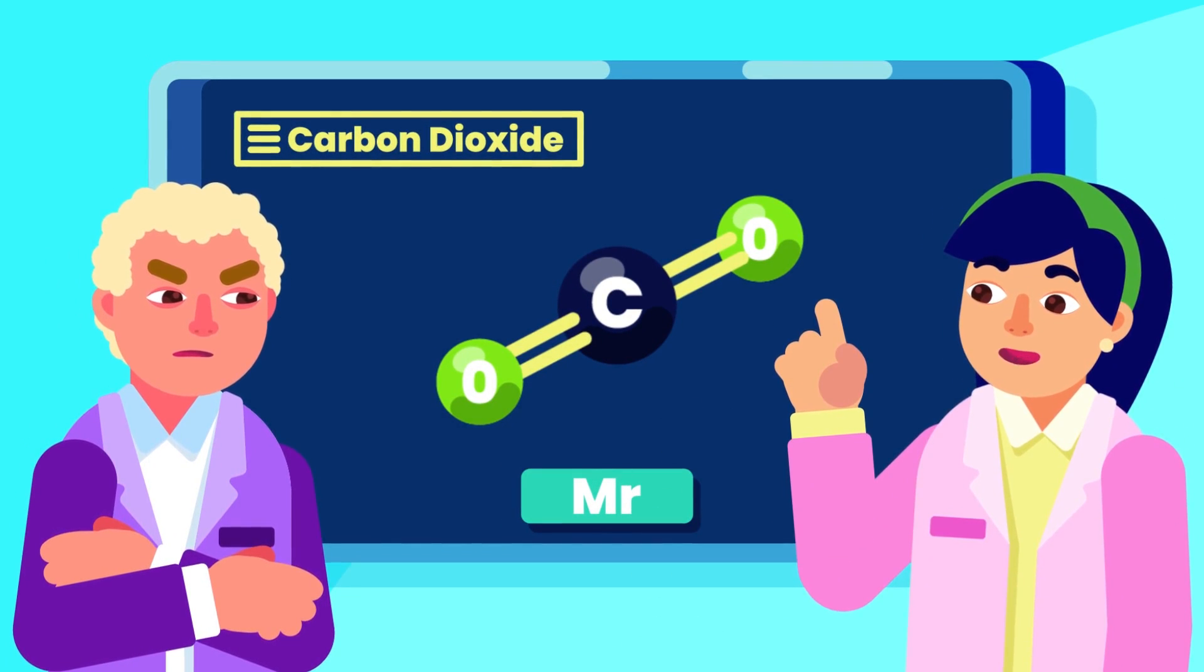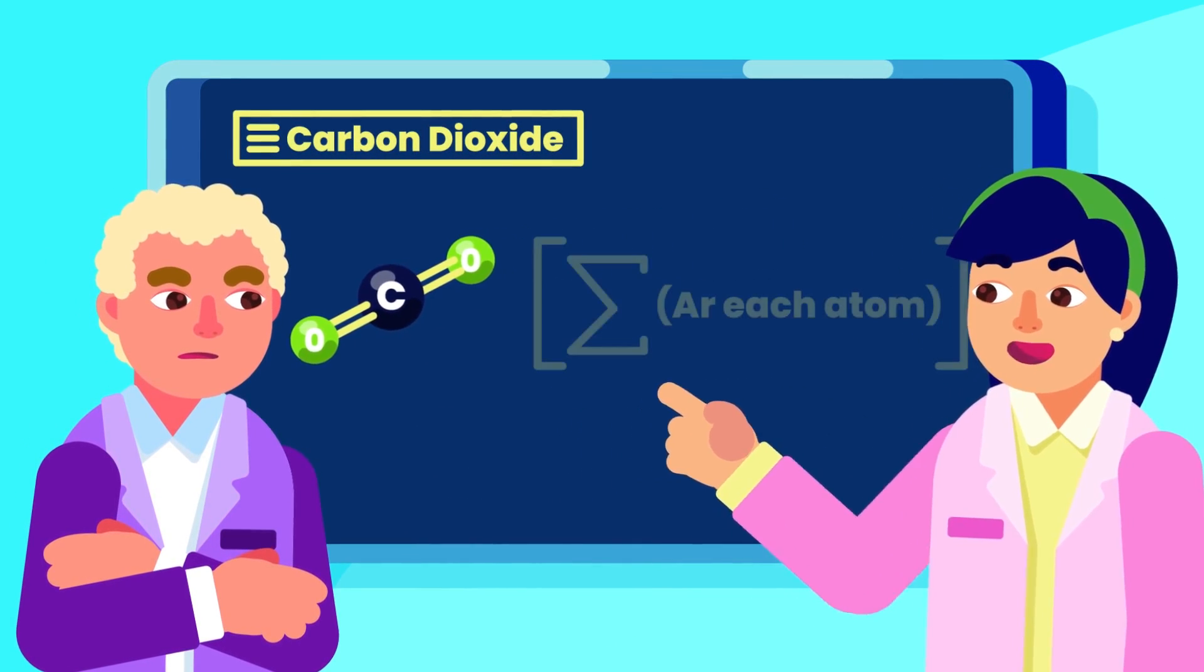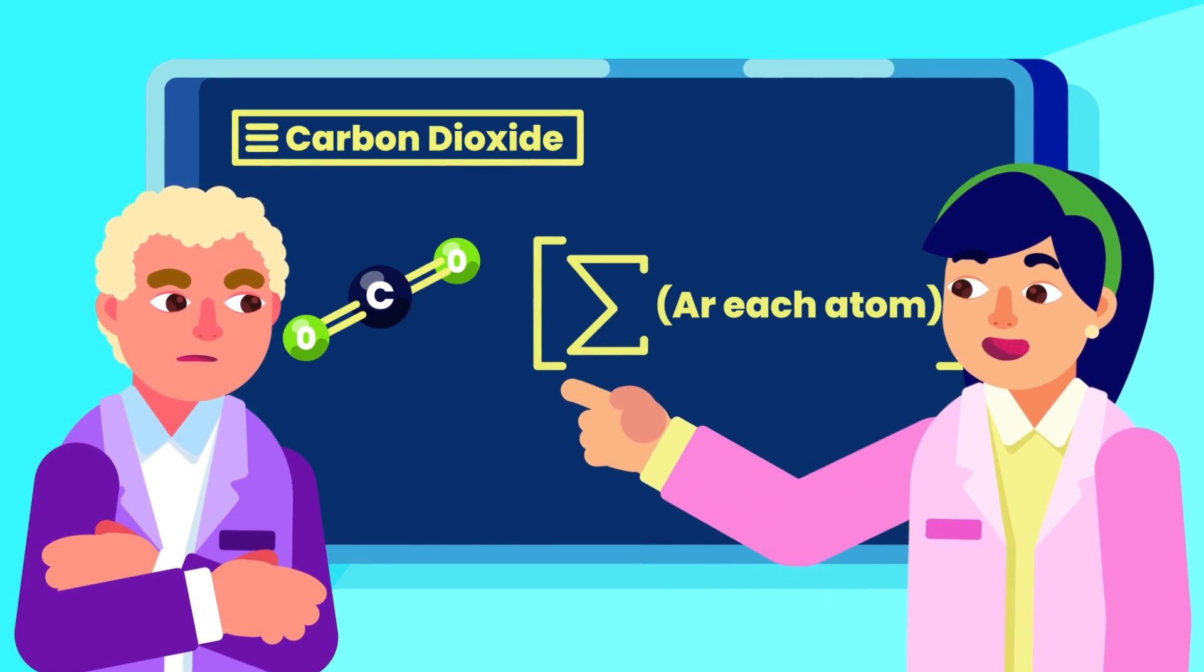The quick way to obtain the value of relative molecular mass, or MR, is by finding the sum of the relative atomic masses, or AR, of all the atoms in its chemical formula.